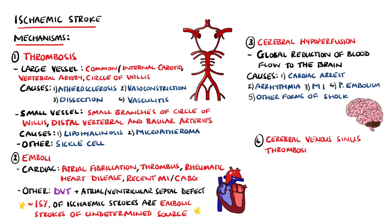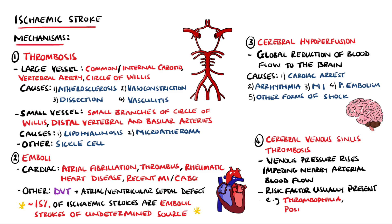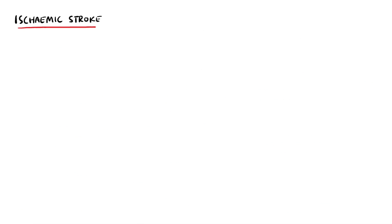Cerebral venous thrombosis can cause ischemic stroke by causing venous pressure to rise beyond that of the arterial pressure, which prevents blood flow. These strokes have a higher probability of hemorrhagic transformation and typically present with a worsening headache over a period of weeks. Patients often have a risk factor present, such as thrombophilia, or may be postpartum.